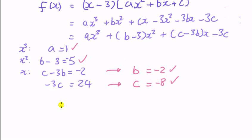So this means that I can now write f(x) is equal to x minus 3, and then substitute into here, x squared minus 2x minus 8, and this thing, we can use the quadratic formula to get the two roots, or we can use the method of completing the squares.